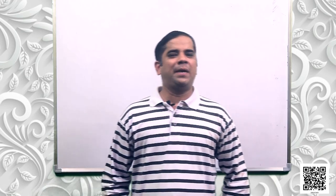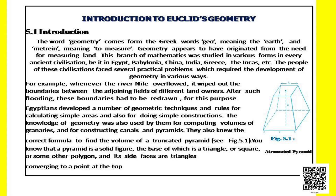As given in your book, whenever the river Nile overflowed, it wiped out the boundaries between the adjoining fields of different landowners. After such flooding, these boundaries had to be redrawn. For this purpose, the Egyptians developed a number of geometric techniques and rules for calculating simple areas and also for doing simple constructions. The knowledge of geometry was also used by them for computing volumes of granaries and for constructing canals and pyramids. They also knew the correct formula to find the volume of a truncated pyramid, as shown in the diagram on the first page of your chapter.